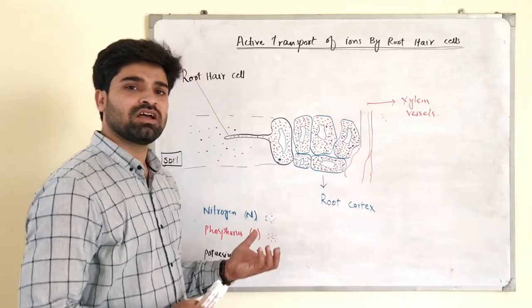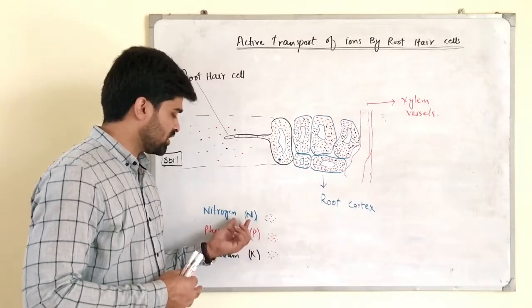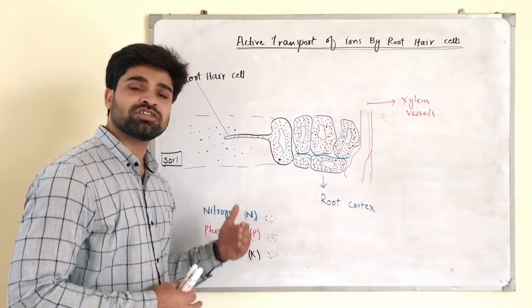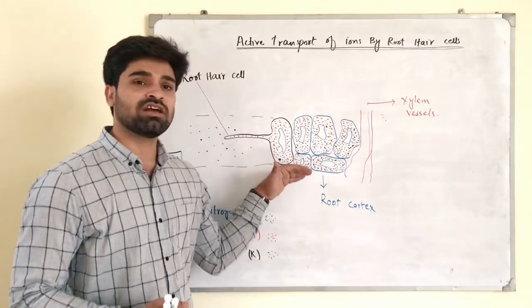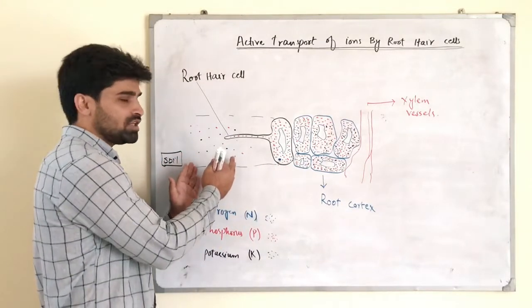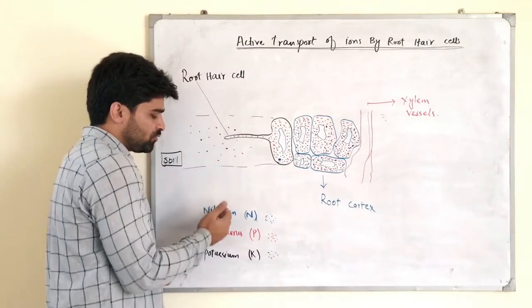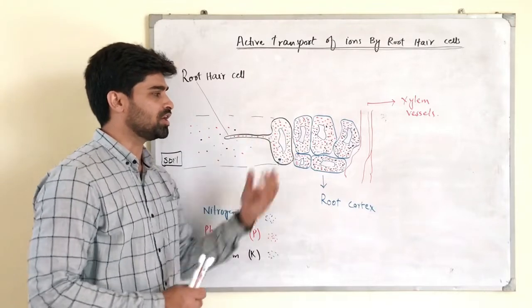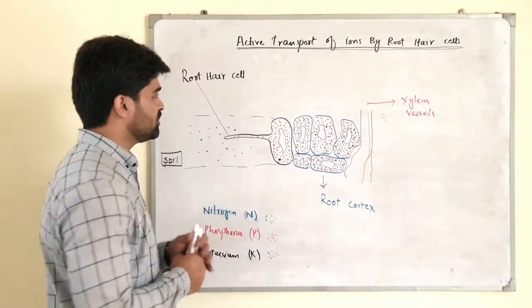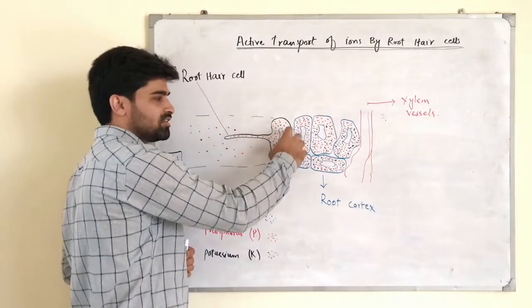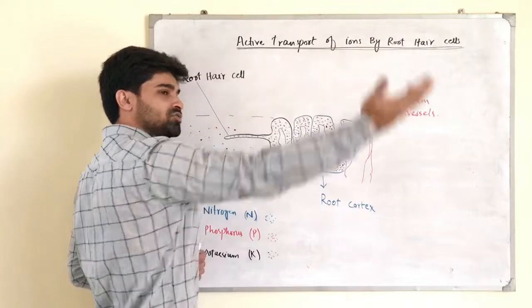Plants need different minerals — most importantly nitrogen, phosphorus, and potassium — in very large amounts. However, in the soil their concentration is very low compared to the cells of the roots. So they are transported actively inside the root hair cell, along the root cortex, and then into the xylem, and transported to other parts of the plant.